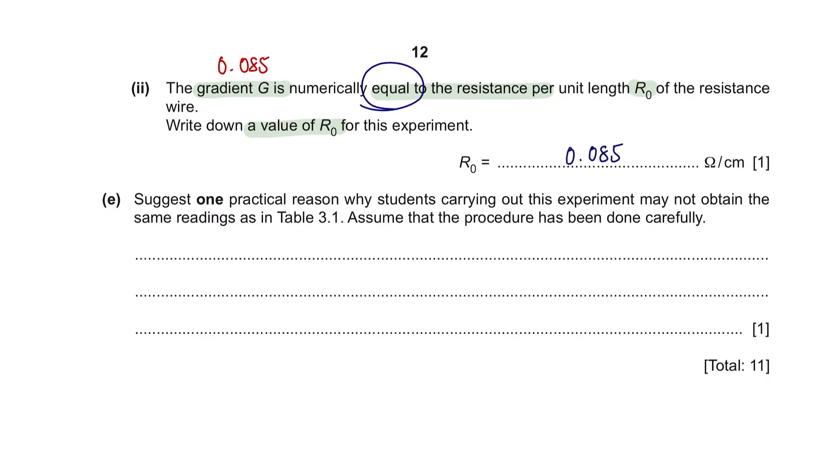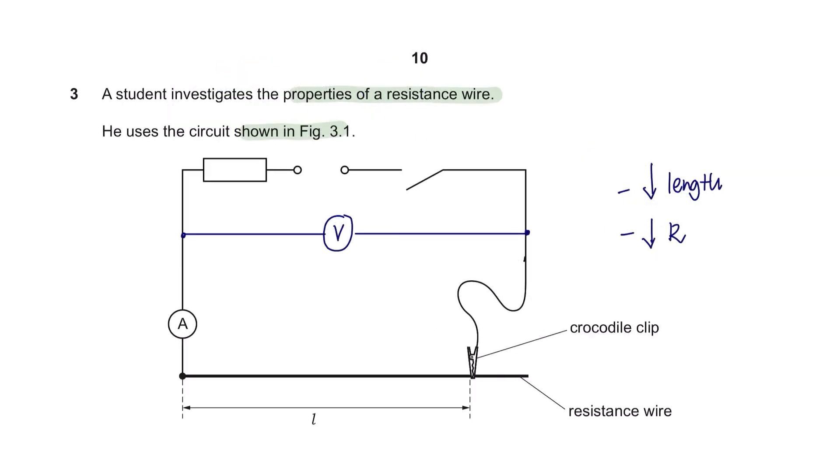Question E suggests one practical reason why students carrying out this experiment may not obtain the same readings as in Table 3.1. One common practical reason that could lead to different readings obtained by different students is that it is not easy to determine the exact position for the crocodile clip to measure the length.